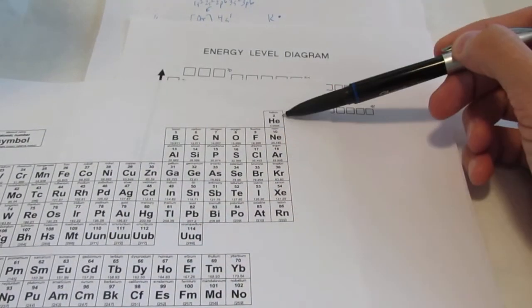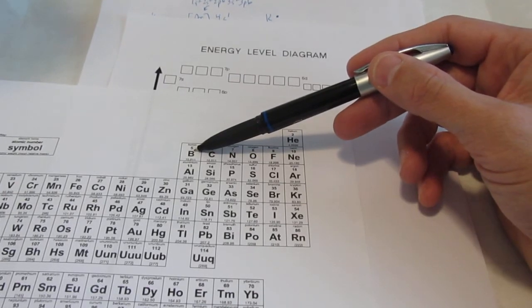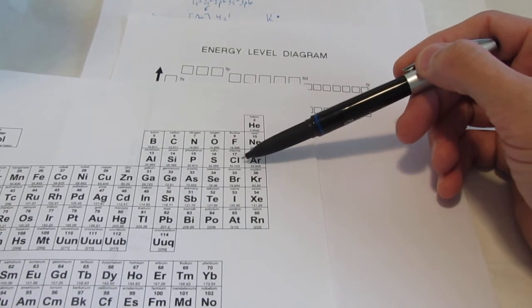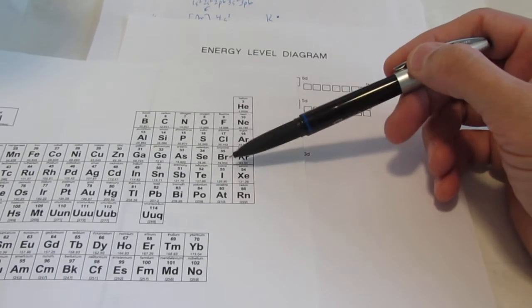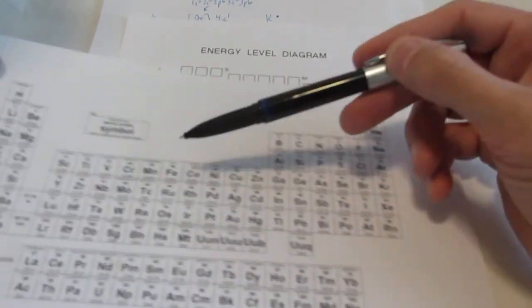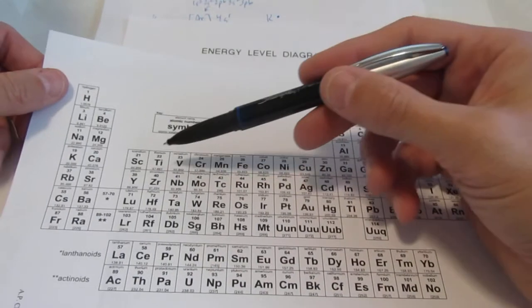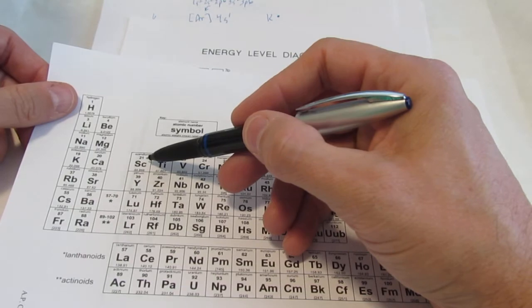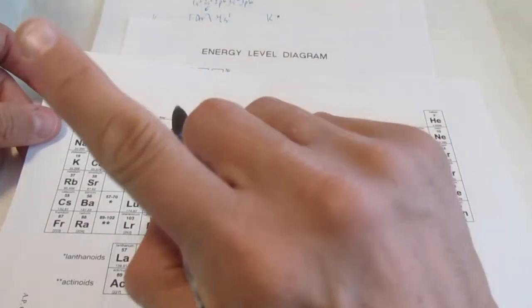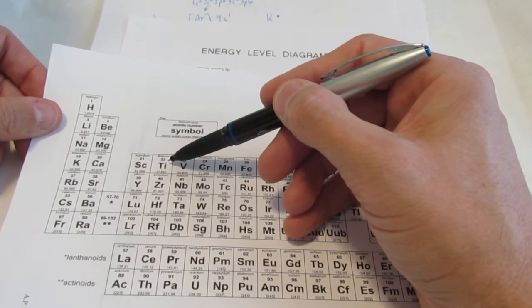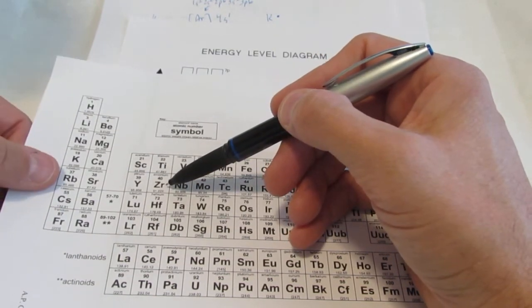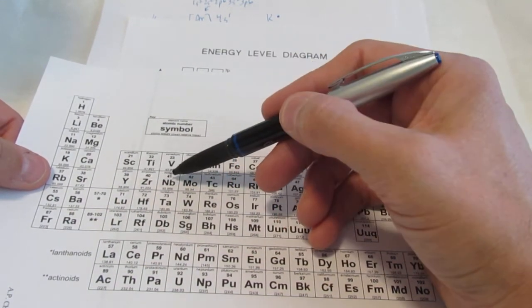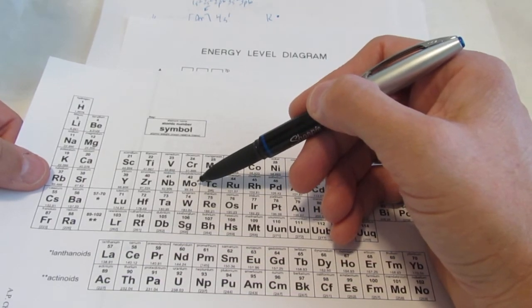Over here we have the P block, except for helium. And this is 2p1, 3p1, 4p1, 5p1. Fluorine would be 2p5. Chlorine would end with 3p5. Bromine would end with 4p5, etc. In the middle we have the D block. In the D block, these always lag one behind the row number. So remember scandium ended with not 4d1, but 3d1. Titanium ended with 3d2. Even though zirconium is in the fifth row, it ends with 4d2. Niobium would end with 4d3. Molybdenum would end with 4d4.